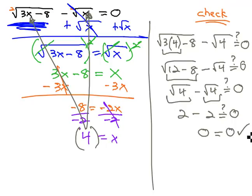Because it worked when we checked it, we know our answer is, in fact, a true real solution to the original equation. We'll say the solution to this equation is x equals 4.